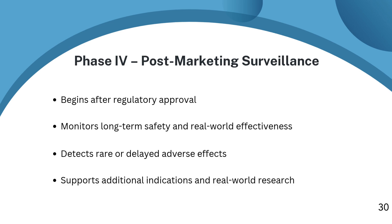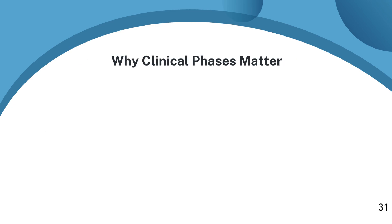So why does all this matter? Because every single phase, from that very first human dose to years after the drug hits the market, is designed to protect patients. The process is long, expensive, and full of obstacles. But it's the only way to ensure that new treatments are not only effective, but safe, reliable, and meaningful in people's lives. And when a drug finally gets approved, it's not just a scientific win. It's a human one.